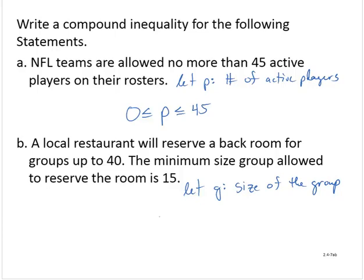I see that there are limits on this: 40 and 15. So G is less than or equal to 40, and the minimum size group allowed to reserve the room is 15, so G is greater than or equal to 15.